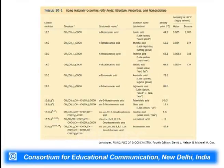Naturally occurring fatty acids include C12, C14, C16, C18, C20, and C24 fatty acids, along with some unsaturated fatty acids with single or multiple double bonds. Based on the presence of double bonds, the melting points also change. The chemical properties of fatty acids differ based on the presence or absence of double bonds and the length of the fatty acid chain — both play very important roles in biological activity.